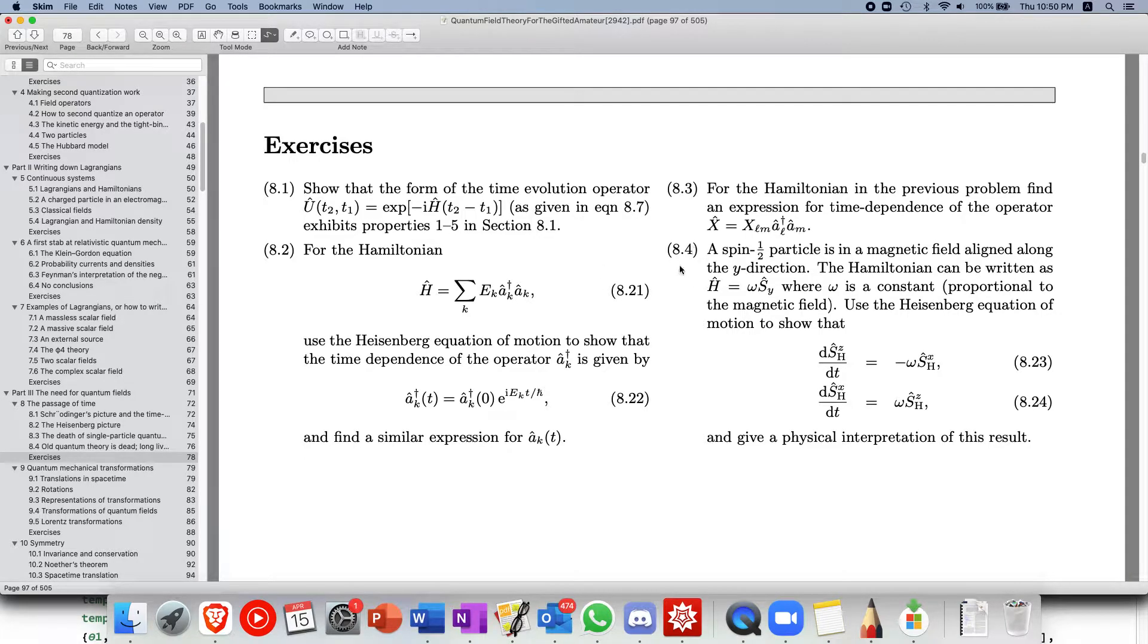Mr. Rives here and today I'll be going through question 8.4 of quantum field theory for the gifted amateur. So a spin half particle is in a magnetic field aligned in the y direction. The Hamiltonian can be written as this and use the Heisenberg equation of motion to show that this.